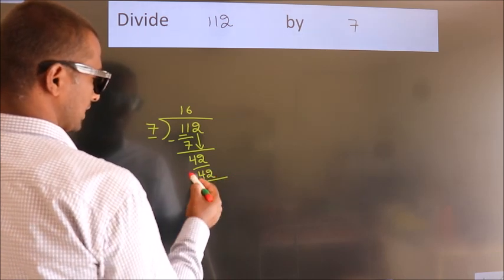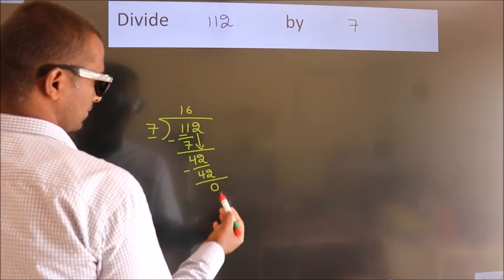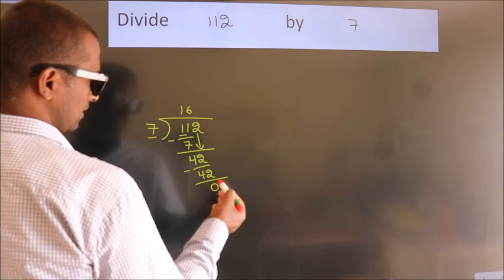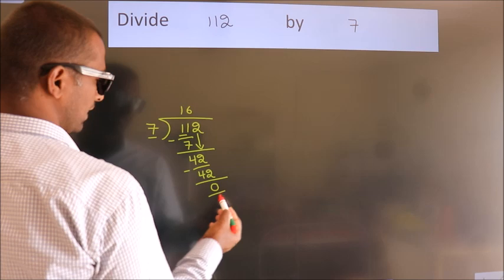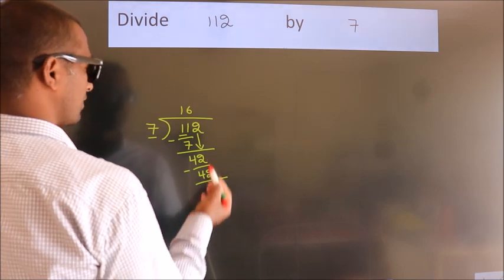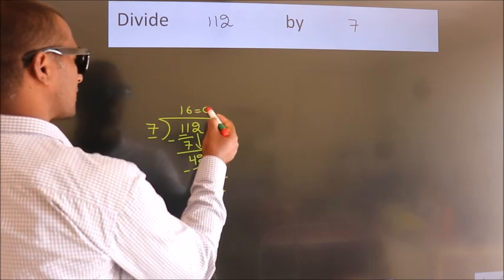Now we subtract. We get 0. After this, no more numbers to bring down, and we got remainder 0. So this is our quotient.